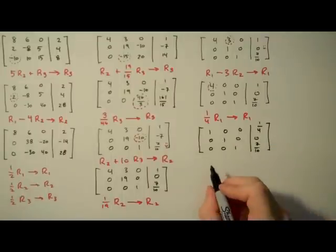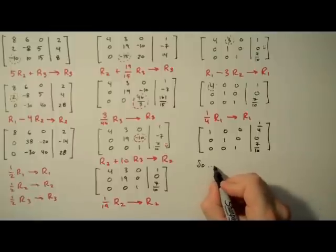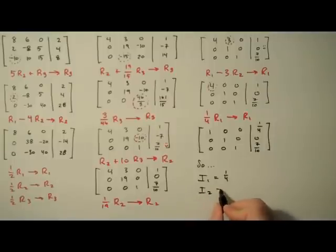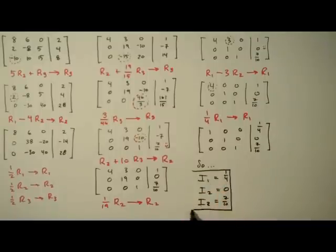And that is what row reduced echelon form looks like. That's hot. Yes, it is, Paris. Yes, it is. So our solutions are i1 is equal to 1 fourth, i2 is equal to 0, and i3 is equal to 7 tenths. And that is how you solve a system of linear equations using a matrix.